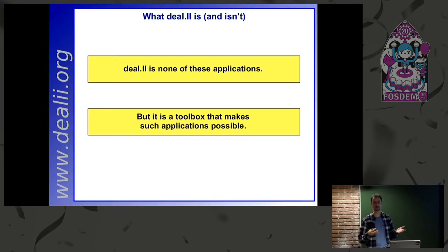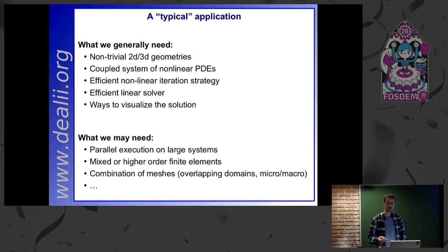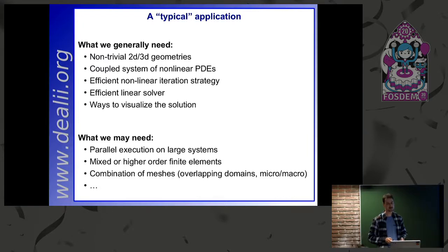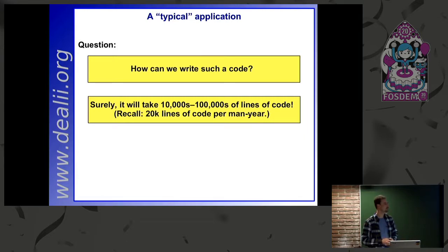Just as MATLAB provides all the functionality but you can build all sorts of things on top of it, deal.II provides the foundation. A typical application involves non-trivial geometries, coupled systems of nonlinear PDEs, nonlinear and linear solvers, visualization, parallelization, and mixed or high-order finite elements. Writing something like this from scratch would surely be tens to hundreds of thousands of lines of code — all commercial tools were written from scratch at that scale. The typical productivity of one programmer is about 20,000 lines of code per year full-time, so it would require many years to write each simulator.